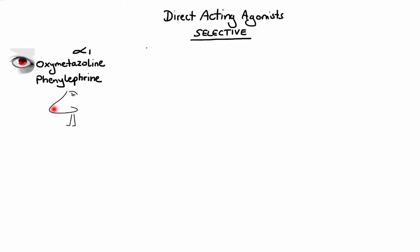Now let's talk about alpha-2 selective drugs. Here we have a very popular medication called clonidine. Stimulation of alpha-2 receptors leads to decrease in sympathetic tone, which, among other things, results in lowering of blood pressure. This is why clonidine is commonly used for treatment of hypertension. Clonidine also has other indications, such as attention deficit hyperactivity disorder (ADHD), and also withdrawal symptoms from alcohol and opioids.